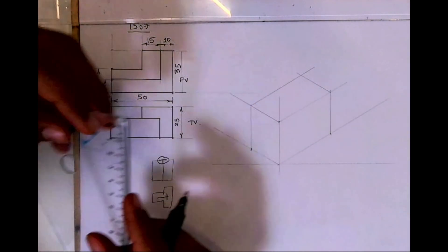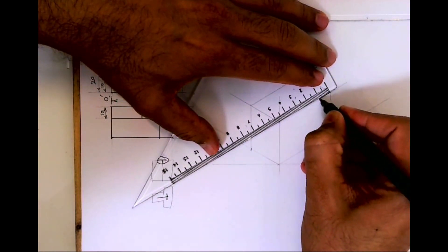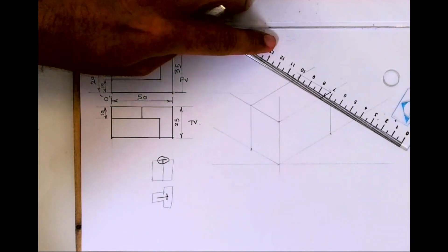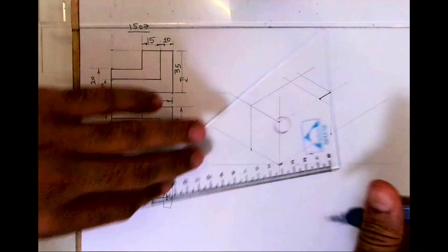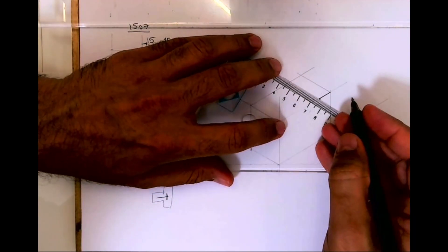So what I'll do, I will draw the top view first. So I will take 10. This is 15.